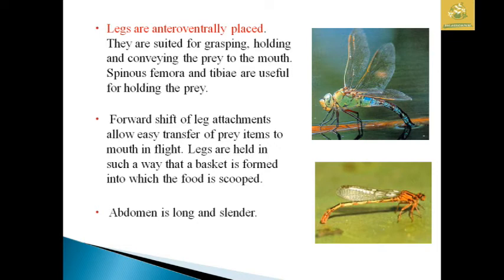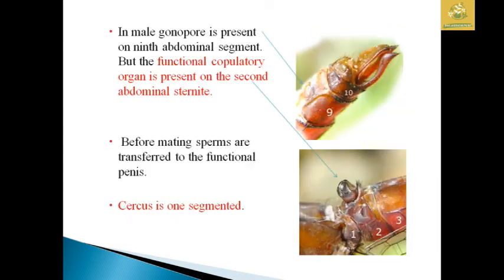A major drawback is they cannot walk with their legs, so their only mode of transportation is flight. The abdomen is long and slender. In males the gonophore is present on the 9th abdominal segment, but the functional copulatory organ is on the 2nd abdominal sternum; before mating, sperm are transferred to the functional penis.